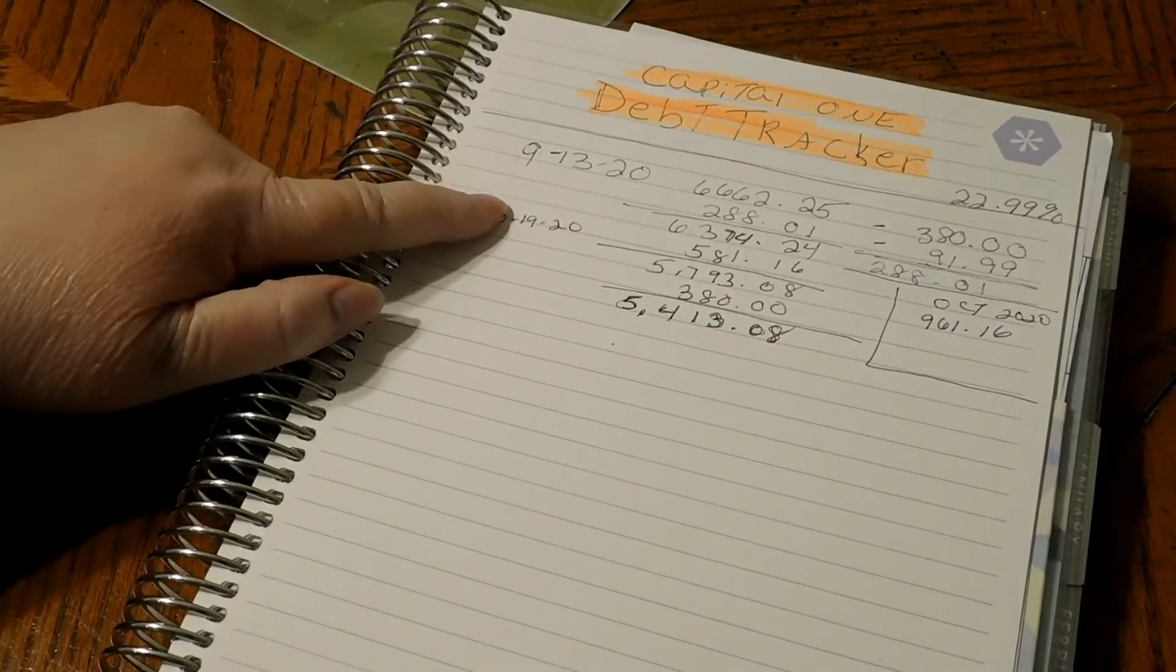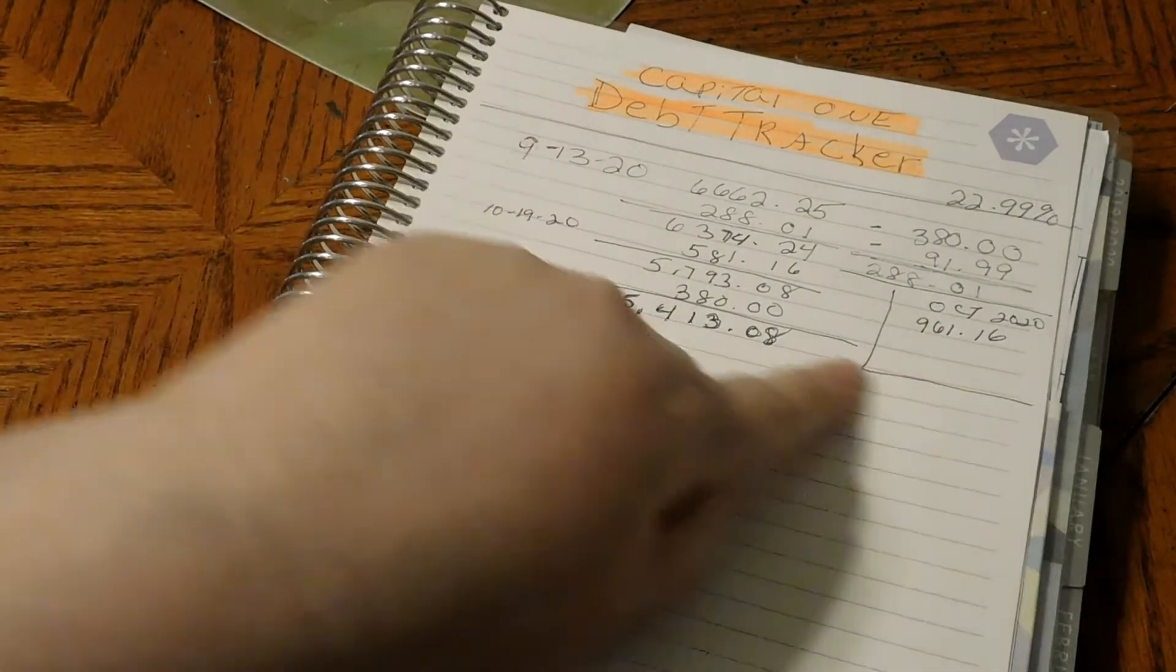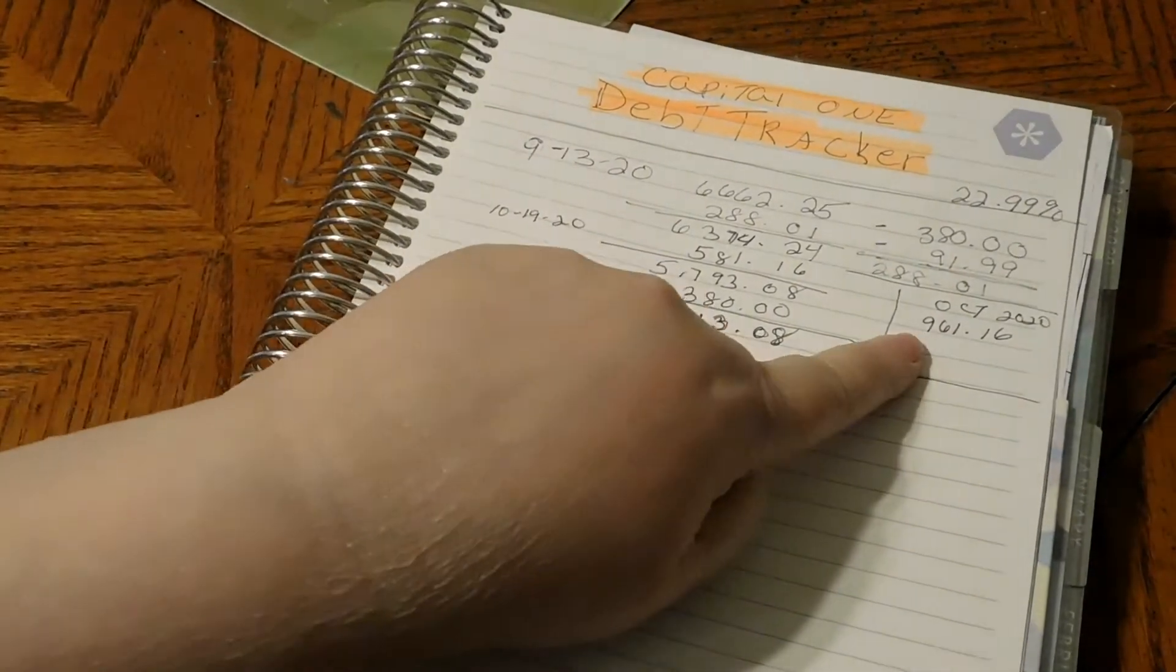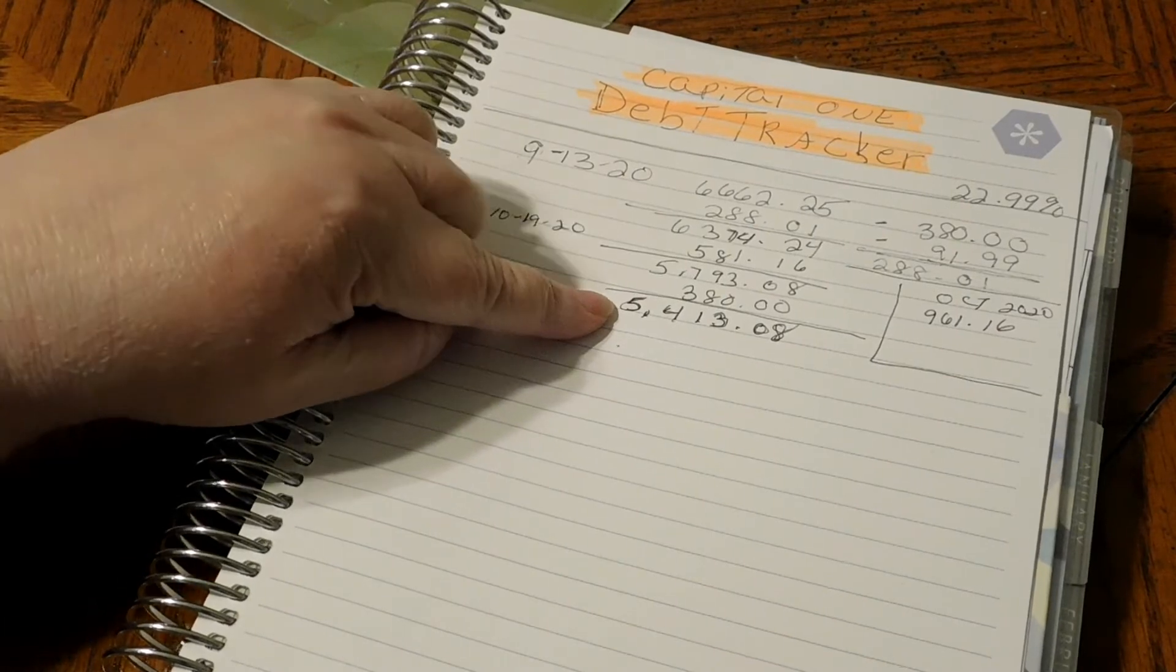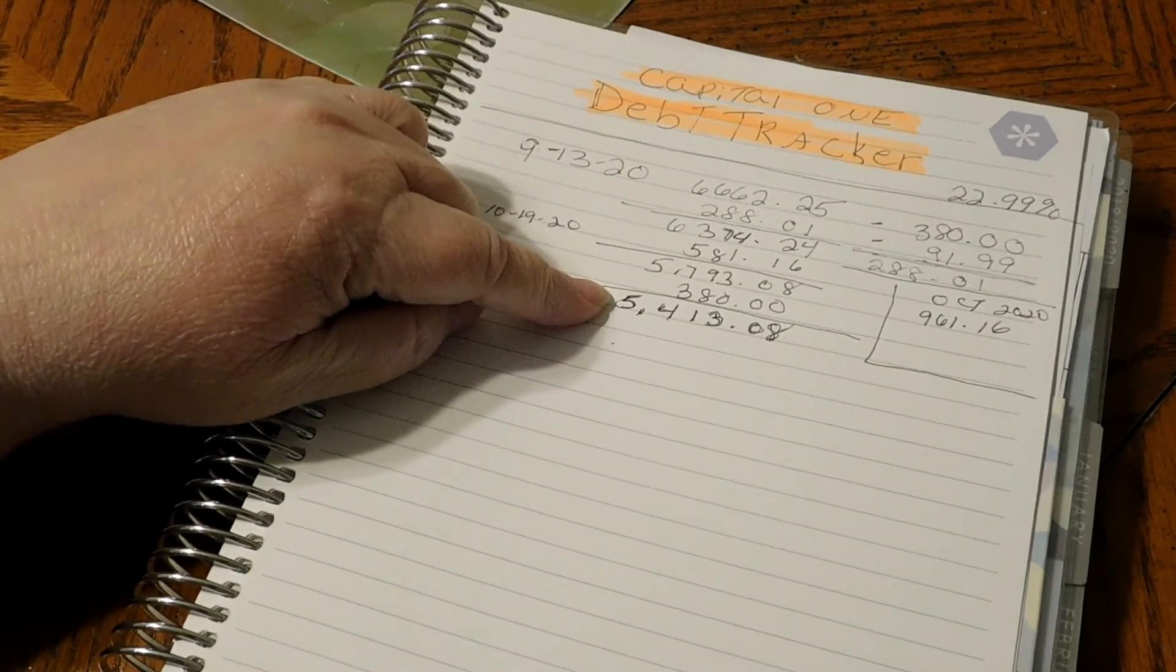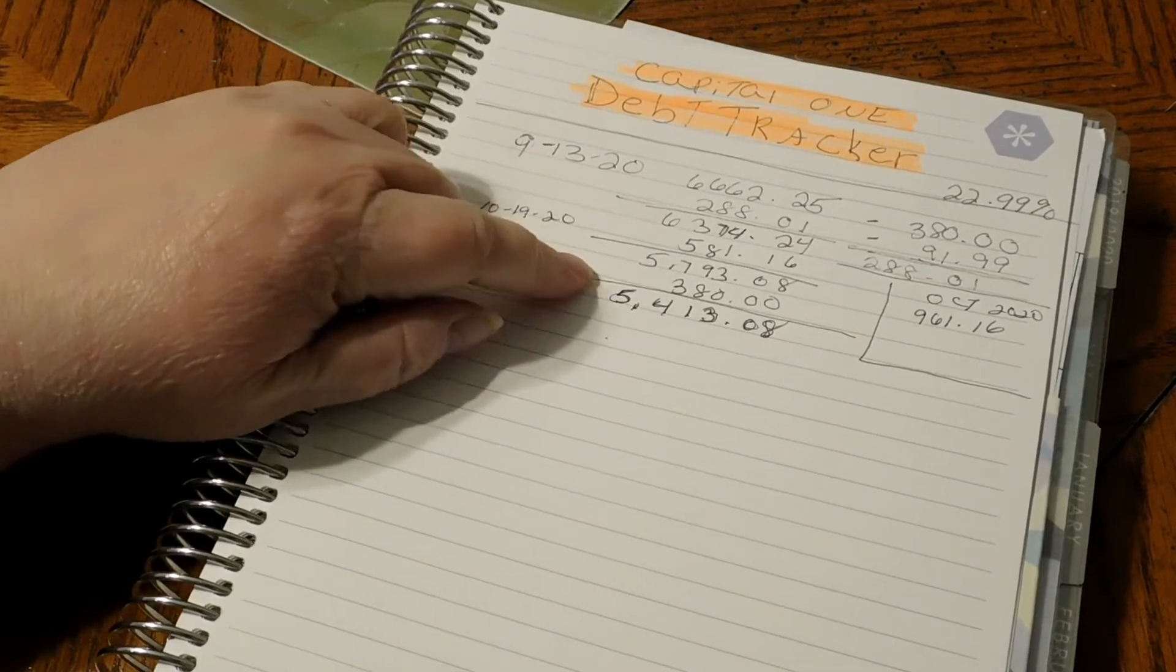This is our debt tracker. We paid back in the month of October $961.16. We still have a balance of $5,413.08.